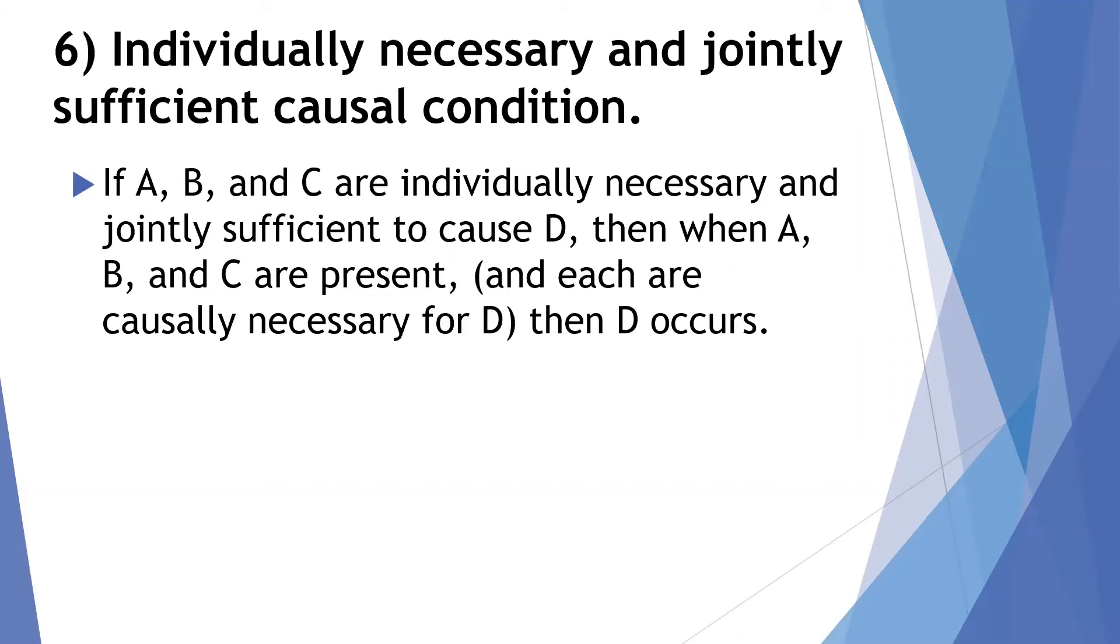So, for example, if A, B, and C are all necessary, they're individually necessary, and if they are all together sufficient, when you have all three of them, they're sufficient to cause D, then when you have A, B, and C, and each are causally necessary for D, then D does, in fact, occur.